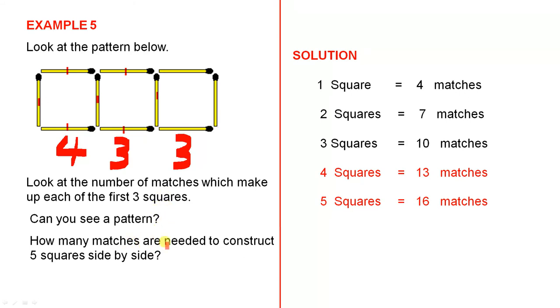How many matches are needed to construct five squares side by side? Let's see how we can do this. We've already seen that to construct one square only, we need four matches, so that's done. Two squares, this one and this one, is four plus three, that gives you seven. Three squares, this one, this one and this one, is four plus three plus three, that gives you ten.